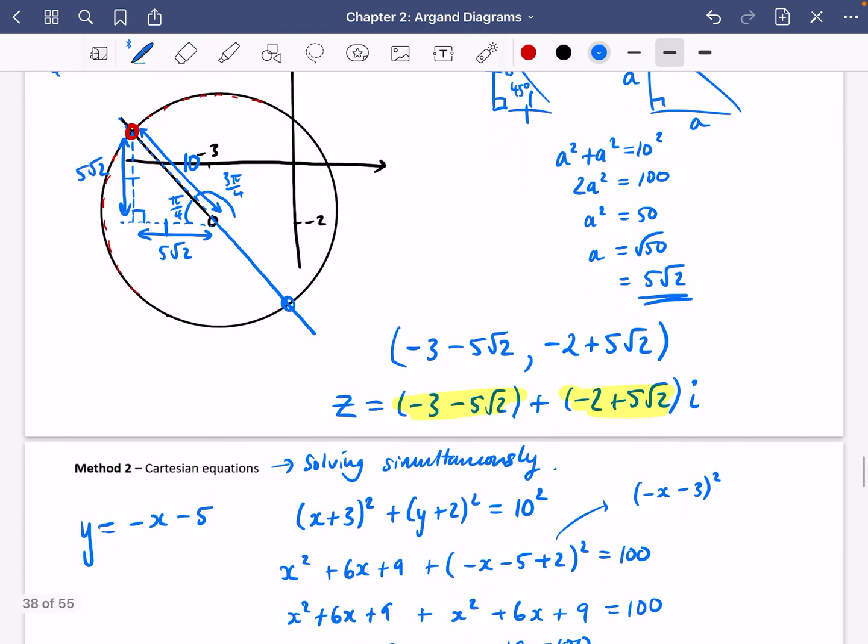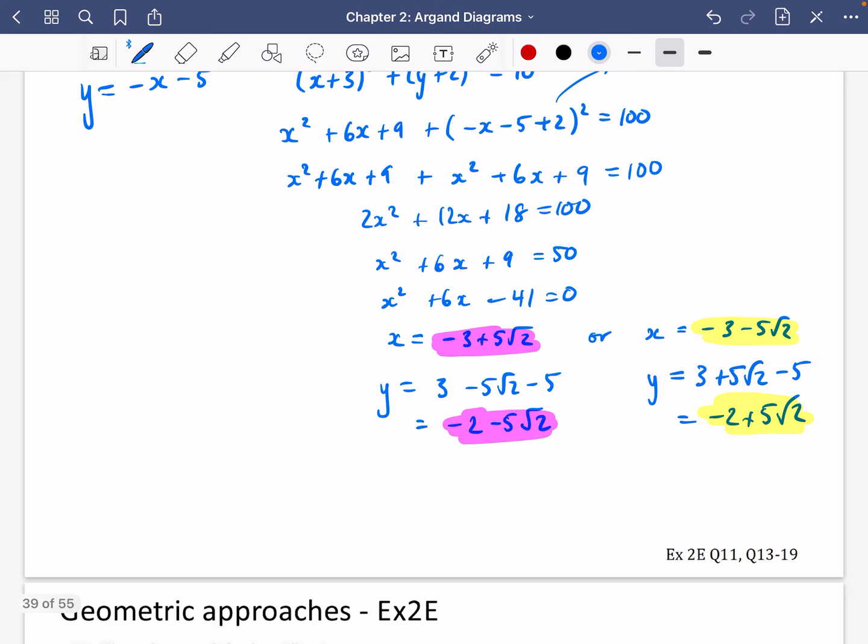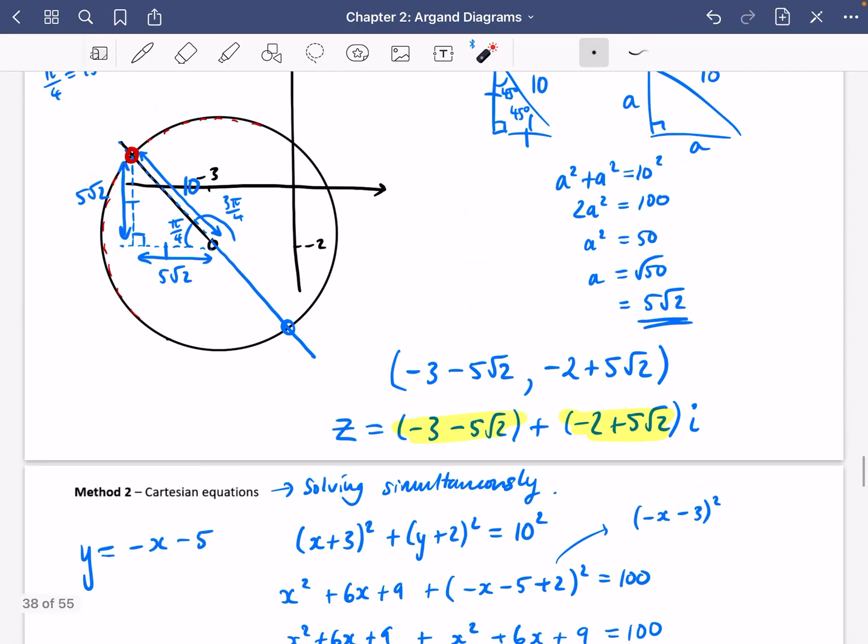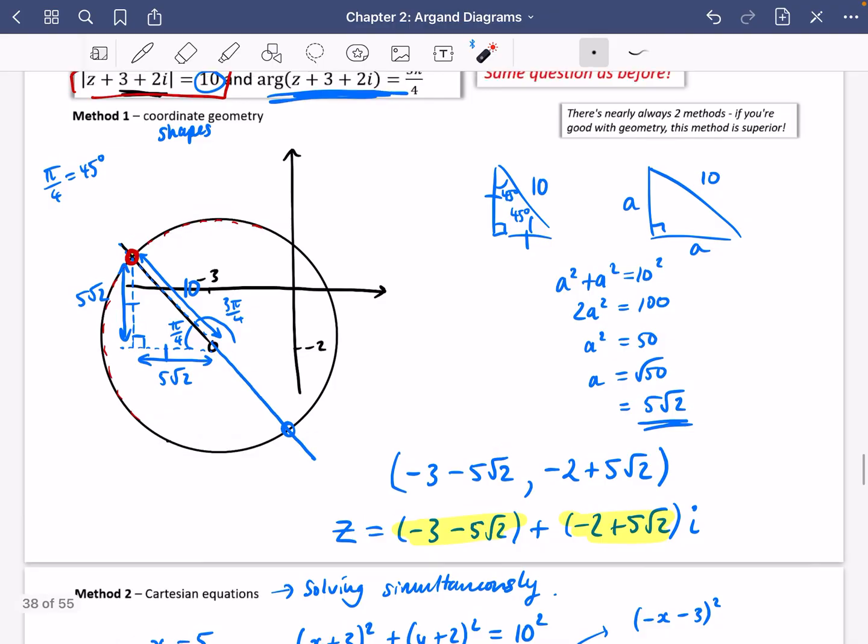That solution that we've got here, you need to try and work out that it's not going to be valid. The bigger x value, which is this one, is not going to be valid. So you have to do some problem solving at the end to decide whether you actually want to include all of the solutions.